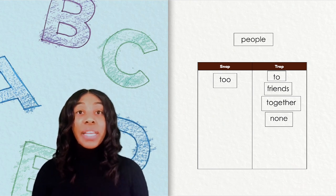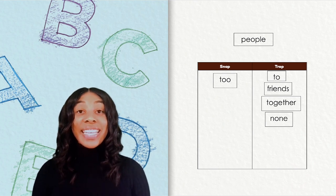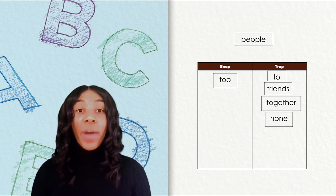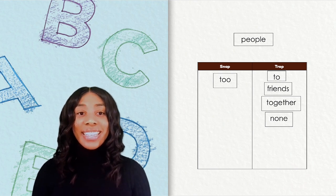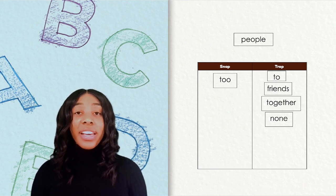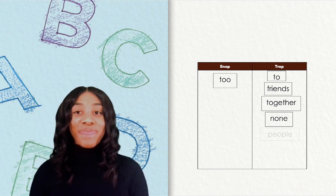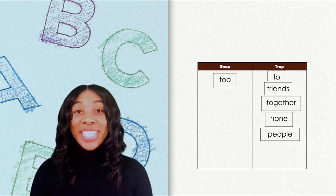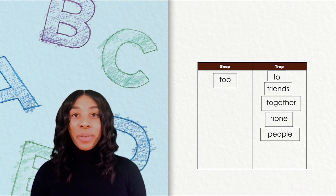Our next word is people, and this is our last one. I see E-O at the beginning of this word, but I only hear a long E. This is another tricky word, so it goes in our track column. Awesome job with this activity. Keep up the good work.